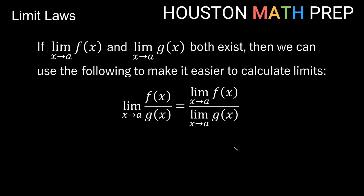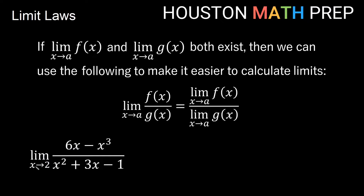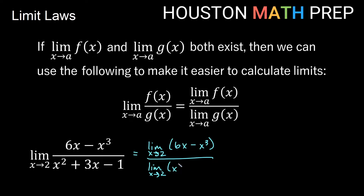We can do a similar thing with quotients, but we want to be careful that the bottom limit is not 0. The limit as x approaches 2 of (6x minus x cubed) over (x squared plus 3x minus 1) equals the limit of the top over the limit of the bottom. We already know these: 4 over 9. If the bottom limit had been 0, we wouldn't be able to use this method.